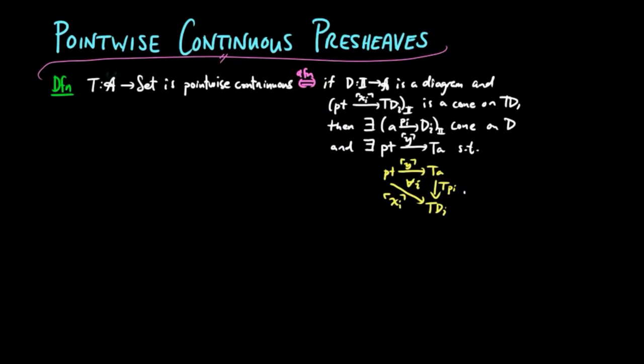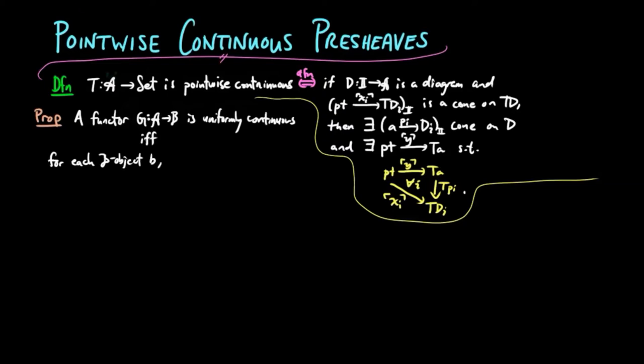Now we prove the equivalence of notions. Namely, a functor G is uniformly continuous if and only if for each object B, the presheave B,BG on A is pointwise continuous.